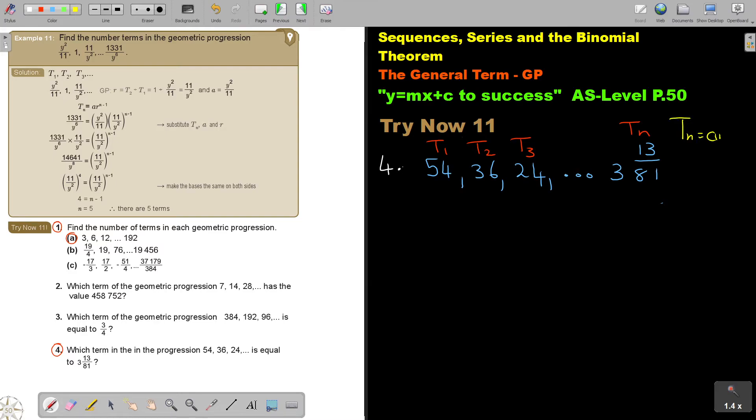And now, basically, I just substitute. It's actually better that I write it here. Because in the place of TN, I'm going to now put that 3 and 13 over 81. In the place of A, 54. Oh, I forgot to work out the value of R. So, if I want to get the value of R, remember, it's T2 divided by T1. So, it's going to be 36 divided by 54. And that's going to be 2 thirds.